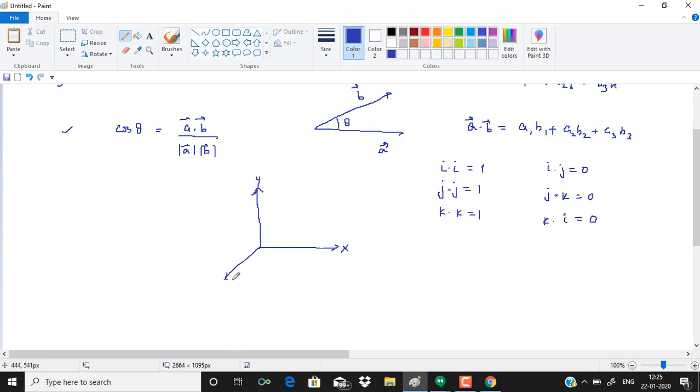When I take i dot i, it means I am taking two unit vectors in the same direction that have 0 degree angle between them. So it becomes magnitude of i into magnitude of i into cos of theta between them. 1 into 1 into cos 0, which is 1.